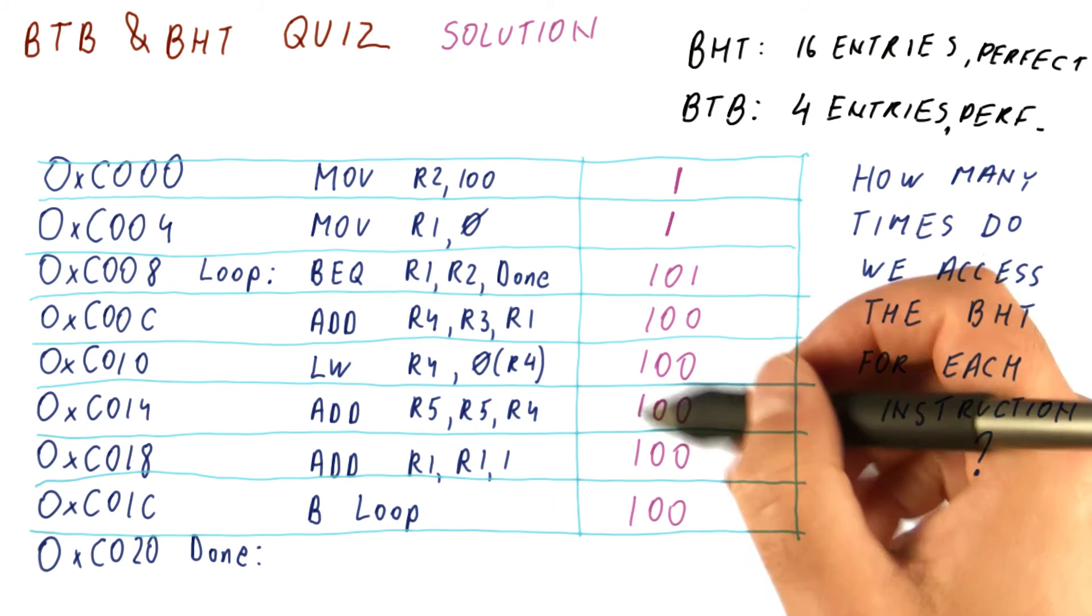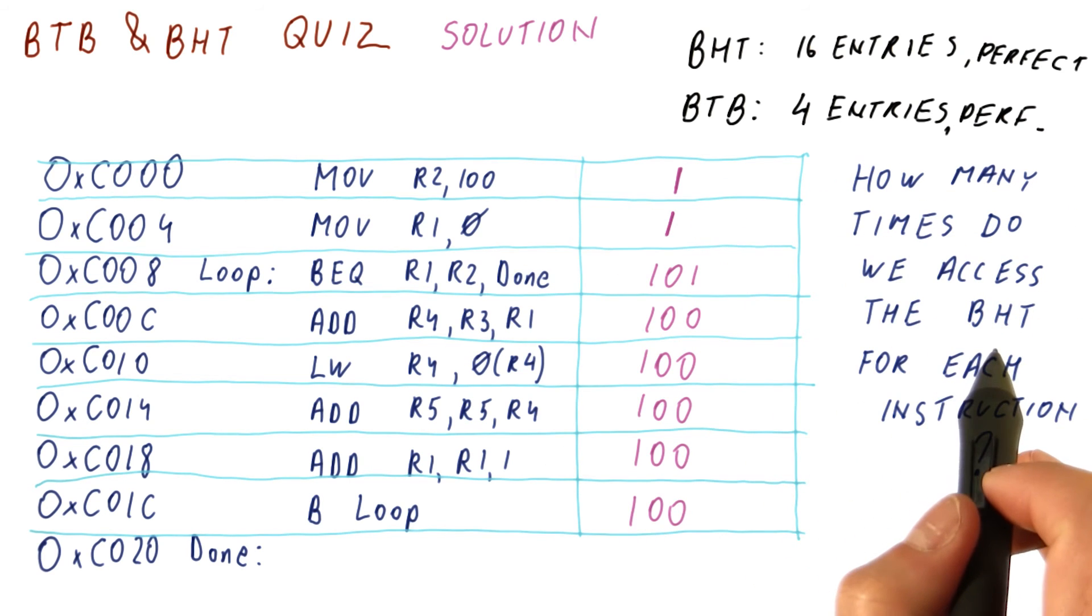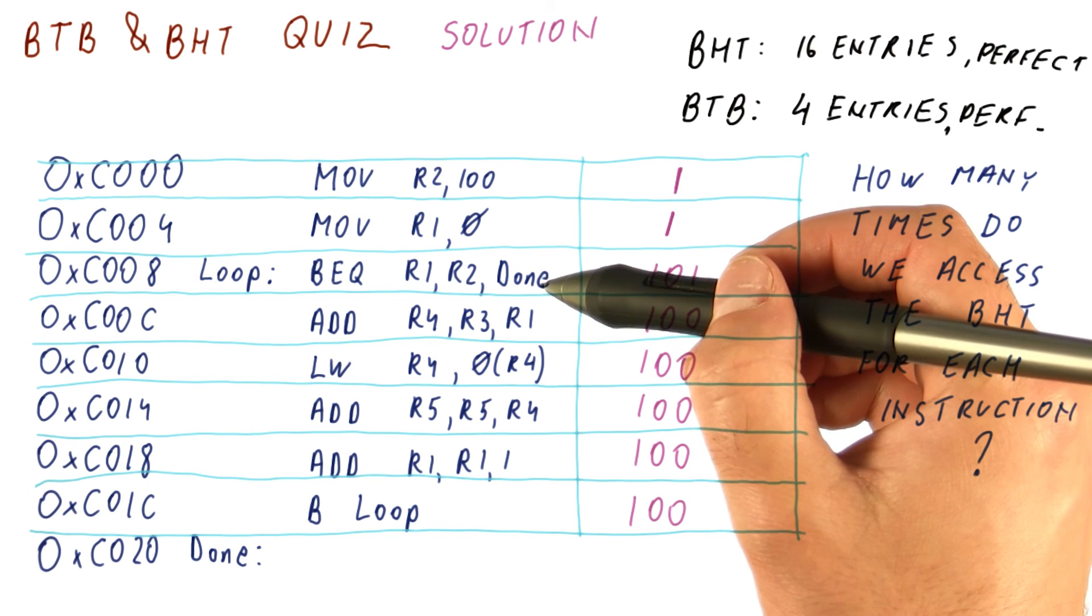And each time any of these instructions execute, we are going to access the BHT to see whether that instruction is a taken branch or not.